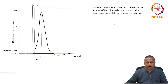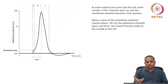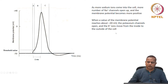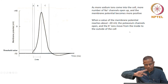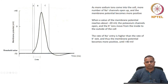Sodium starts flooding in. When the value of the membrane potential reaches about minus 20 millivolts, the potassium channels open up, and potassium ions move from the inside to the outside of the cell — because the potassium concentration inside is typically higher than outside. This movement is in the reverse direction, and potassium is also positively charged. However, the rate of sodium entry is higher than the rate of potassium exit at this point, so the membrane potential continues to become more positive.